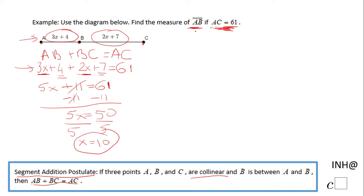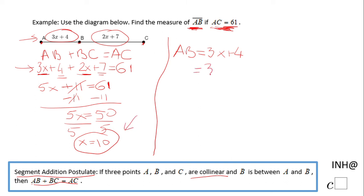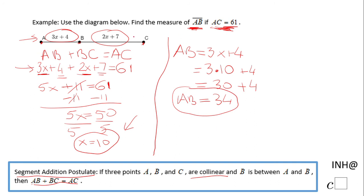Now let's go back — remember, we need to find AB. So I'm going to take the expression for AB, which is 3x plus 4, and replace x with 10. That gives us 3 times 10 plus 4. Following the order of operations, that's 30 plus 4, which equals 34. So AB is 34.